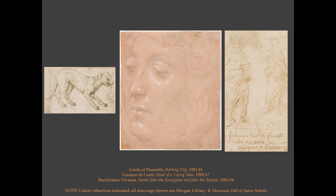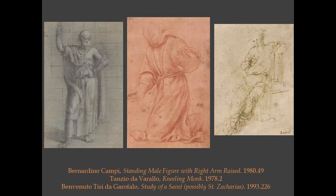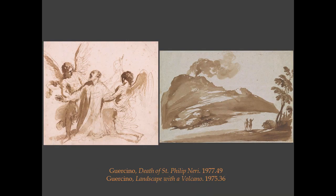Among the early drawings, there are a group of sheets from the Pisanello circle, Florentine medal points, and rarities such as a sheet by Bartolomeo Vivarini. Some of the 16th century treasures include a Raphael study for the Vatican tapestries, a head by Sovaldo, and several sheets by Parmigianino. The collection is notably rich also in artists from off the beaten path, such as Bernardino Campi, Tanzio da Varallo, and Garofalo. The Baroque drawings are equally strong, with good representations of sheets by Guercino, Mola, Bernini, and many others.